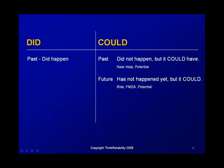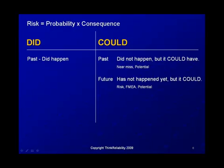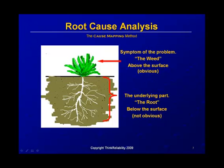Another concept that ties in with risk is the distinction between 'did' and 'could.' Anything in the past is a 'did' — it did occur — and anything in the future is a 'could.' The word 'could' is also used for something that did not happen but could have. The probability that something did happen in the past, once it has occurred, is 100%. So there is no risk in the past — risk is always in the future, in the things that have not happened yet but could happen.